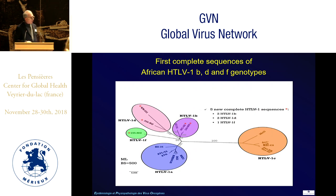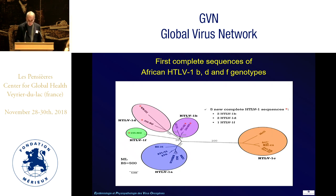We performed the first complete sequences of viruses present in Africa — HTLV-B, HTLV-D, and HTLV-F — the first to be described for these subtypes. The viruses present in Aborigines from Australia and Vanuatu are quite different from those in Africa.